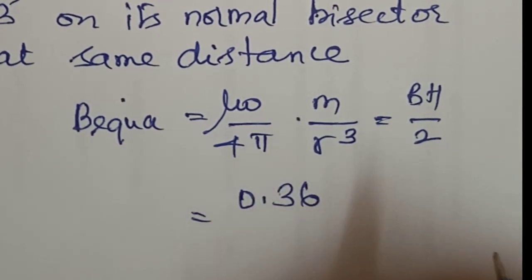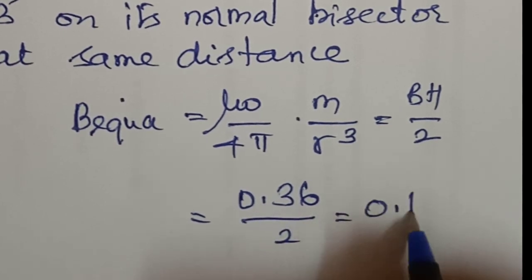Therefore B equatorial is 0.36 by 2, which equals 0.18 gauss.